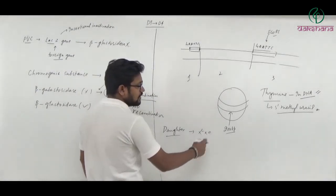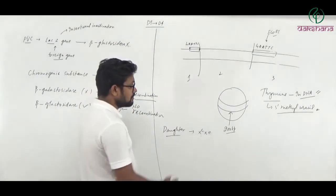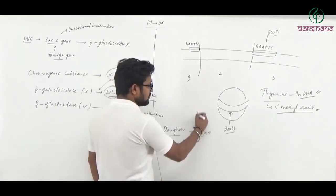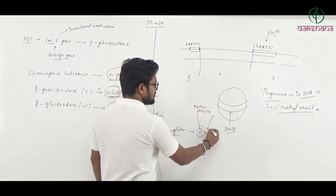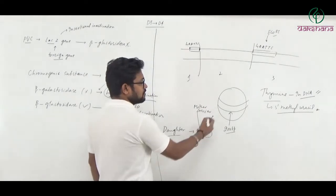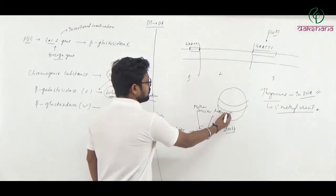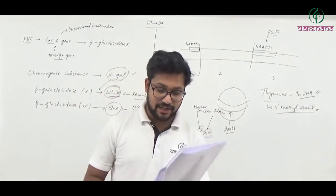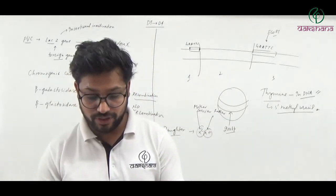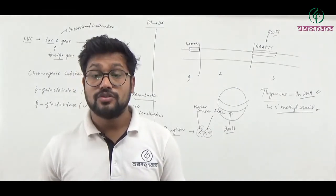Regarding color blindness (question forty-five): for a daughter to be color blind, both X chromosomes must carry the affected gene. This is only possible when the mother is a carrier and the father is color blind. So in question number forty-five, the fourth answer — mother is carrier, father is color blind — is correct.